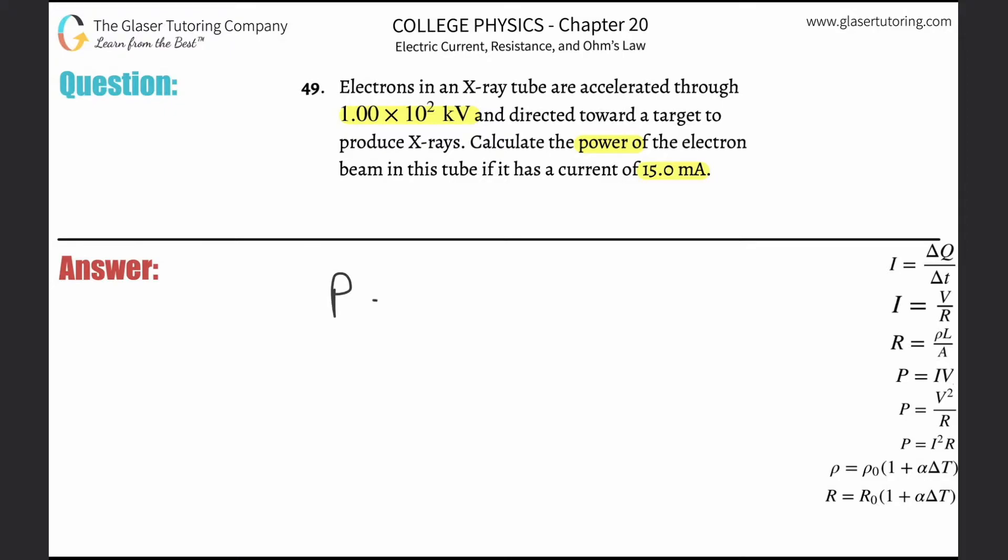So they want us to calculate the power. They're giving us a voltage and they're giving us a current. So I know I'm going to be using the formula P = IV. In other words, power is going to be equal to the current flowing through an object or a particular point multiplied by the voltage between two points, or the potential difference.